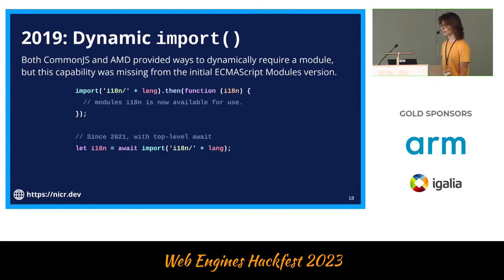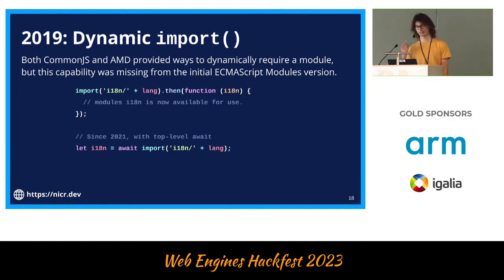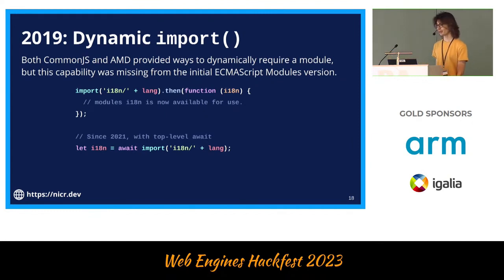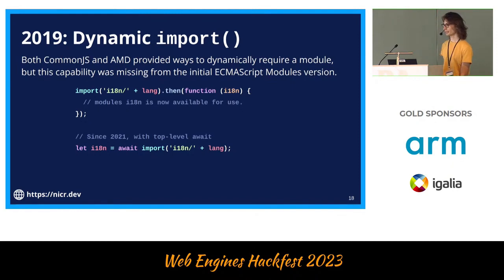Four years later, ESM gained a feature that both CommonJS and AMD already provided since the beginning: how can you load a module that you cannot declare statically? Dynamic imports were introduced — very similar to the asynchronous require function that AMD had. This API is promise-based rather than callback-based, but conceptually the same. A couple of years later, ECMAScript modules also got top-level await, so we can use dynamic import syntax at the top level of a module without worrying about callbacks.